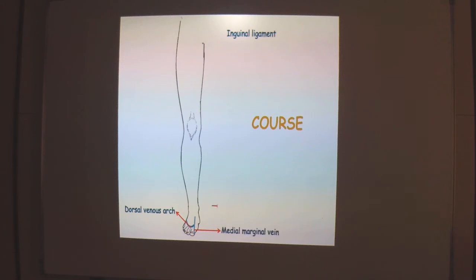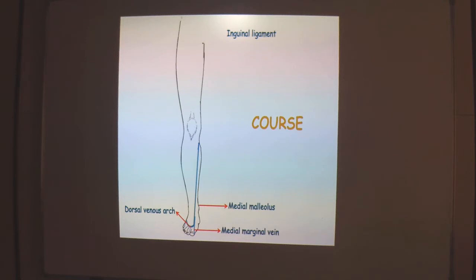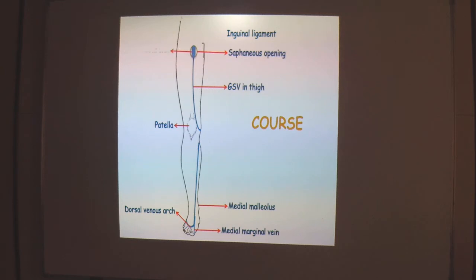The vein ascends upwards towards the medial malleolus of tibia for about 2.5 cm, then ascends obliquely upwards towards the medial surface of the lower third of the tibia, about a finger's breadth behind the medial border of the tibia. It comes to lie on the posteromedial side of the knee joint, about one hand's breadth posterior to the patella, then ascends along the medial side of the thigh to reach the saphenous opening in the fascia lata. At the level of the saphenous opening, it pierces the cribriform fascia and drains into the deeper femoral vein.